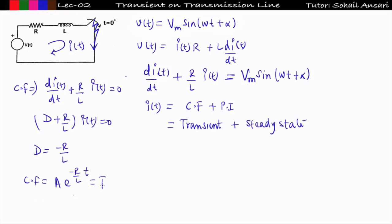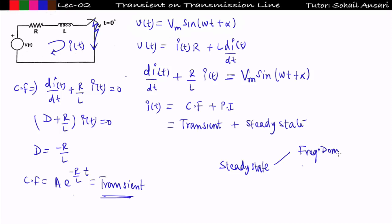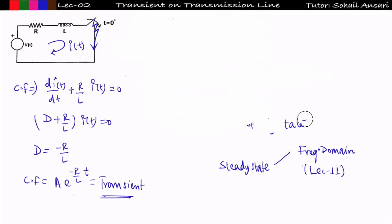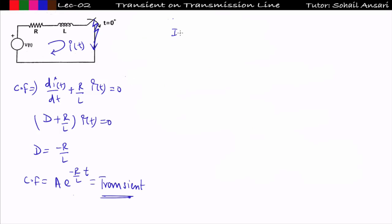To find the steady state response there are two methods: the time domain approach and the frequency domain approach. I already explained the frequency domain approach in network theory lecture number 11 on steady state response. So let me use that concept — why learn a new concept when I can relate to what you studied previously? To find the steady state response we go with the frequency domain approach, finding i(t) = V(t)/Z(t).